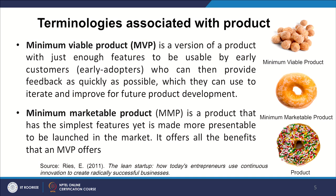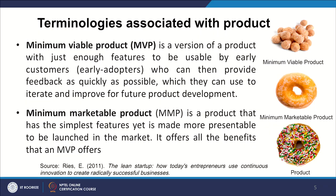When we talk of MVP — Minimum Viable Product — it is a version of a product with just enough features to be usable by early customers, early adopters, who can then provide feedback as quickly as possible, which can be used to iterate and improve for future product development. For example, you have prepared a donut and then early consumers give you a perspective on how this can be developed further. Minimum Marketable Product is a product that has the simplest features yet is made more presentable to be launched in the market — it offers all the benefits that an MVP offers.